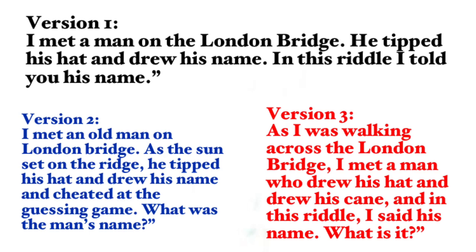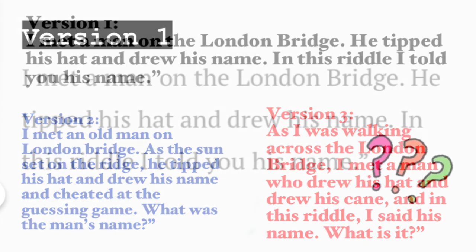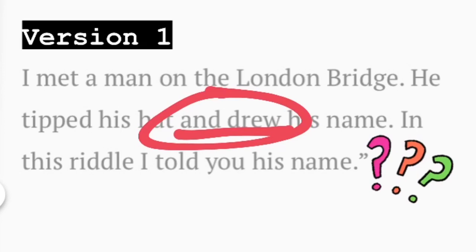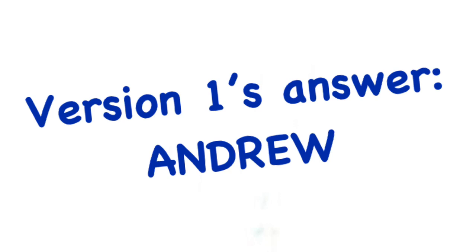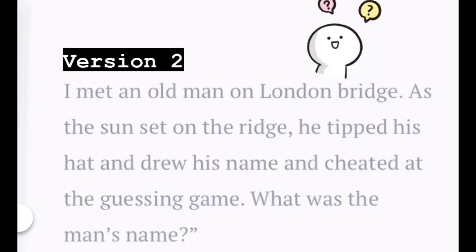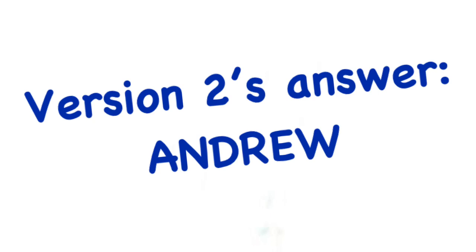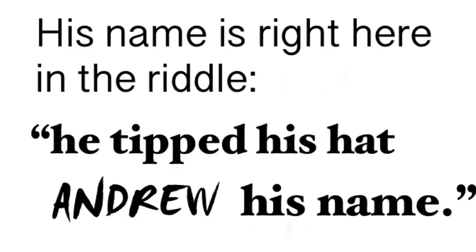Let's solve this together one by one. In version one, you can see 'and drew' — so the answer for version one is Andrew. My answer for version two is still the same: it's Andrew. No matter which version you are reading, either one or two, the answer is still the same — his name is Andrew.